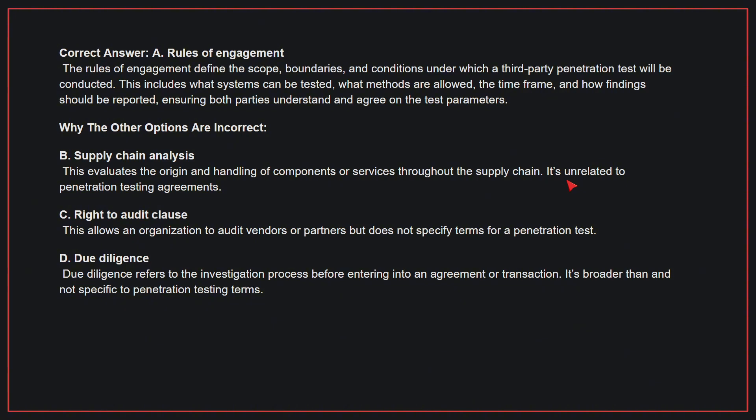This includes what systems can be tested, what methods are allowed, the time frame, and how findings should be reported, ensuring both parties understand and agree on the test parameters. Why the other options are incorrect? B: Supply chain analysis. This evaluates the origin and handling of components or services throughout the supply chain — it's unrelated to penetration testing agreements. C: Right to audit clause. This allows an organization to audit vendors or partners but does not specify terms for a penetration test. D: Due diligence. Due diligence refers to the investigation process before entering into an agreement or transaction. It's broader than and not specific to penetration testing terms. Therefore, the correct answer is A.